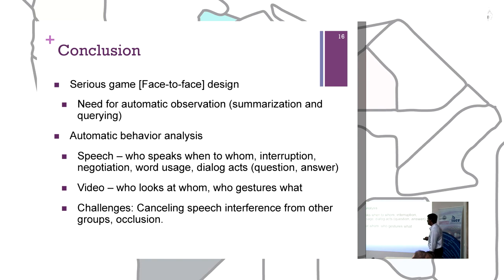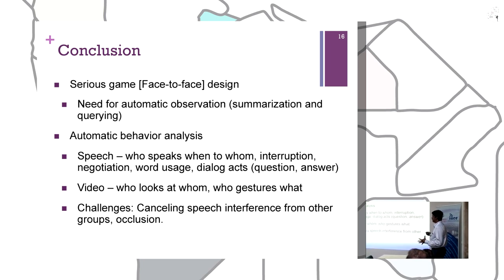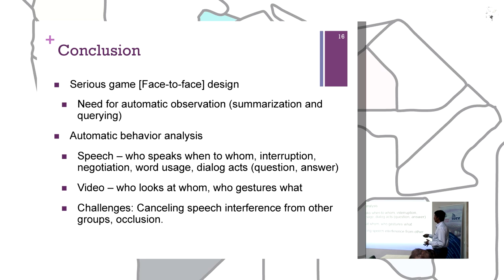In video, one has to see who looks at whom and who gestures what. One of the challenges is that what I've shown was a small group interaction, whereas in serious game situations you have groups of groups — multiple groups — and it is essential to cancel speech interference from other groups. There is also the possibility of occlusion. The whole behavior tracking problem is quite challenging in the setting of serious games, and there is a lot of work to be done in multimedia analysis for adapting technologies developed in a small group setting to a group-of-groups setting.